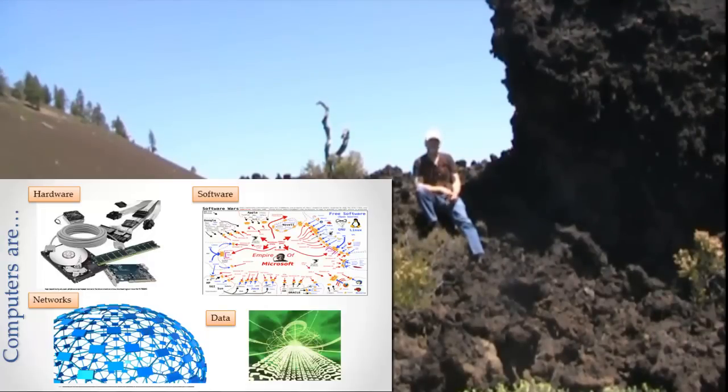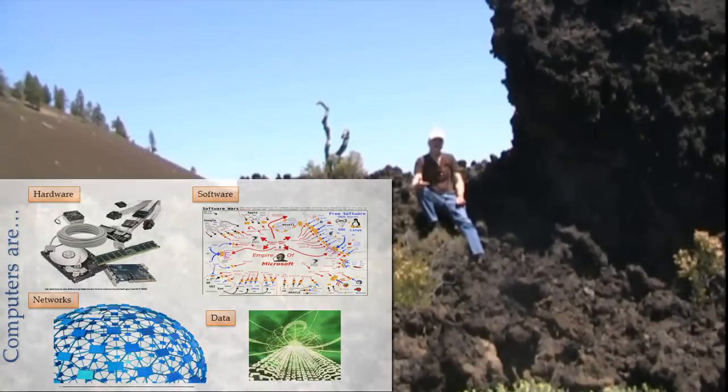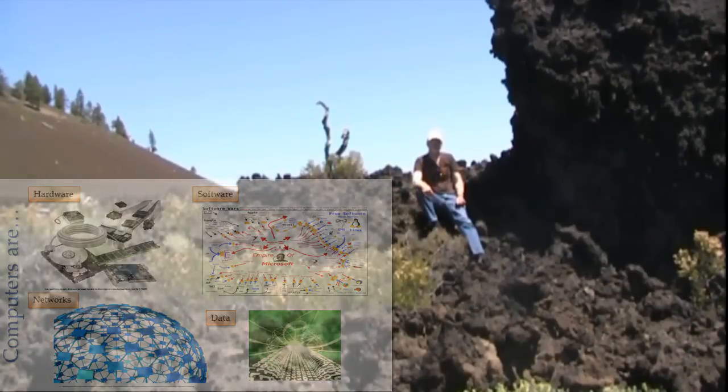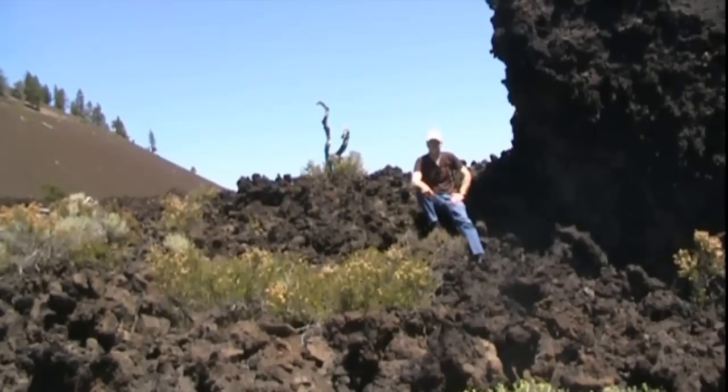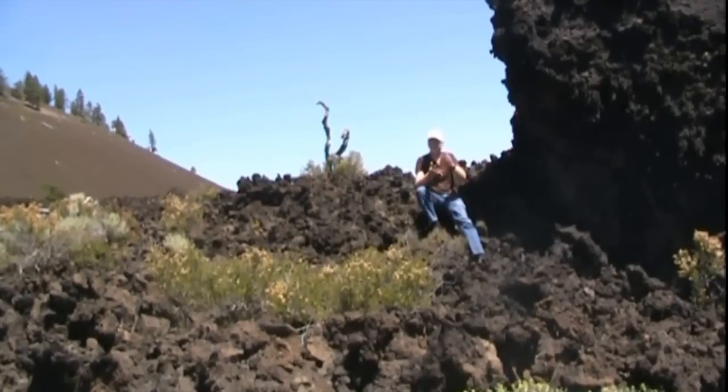So, computers consist of hardware, software, networks, and data. Hardware is the physical stuff. Software is the instructions that tell the physical stuff what to do towards some result, towards some aim that we have. Networks are the way that our computers communicate with each other, making in effect supercomputers, larger and larger conglomerations of computers all talking to each other, sort of like societies. And finally data, which is the stuff, the stuff that we care to store, the stuff that we care to put into our computers, and the stuff that we care at some point to get out, and the stuff that we care to manipulate in some way.